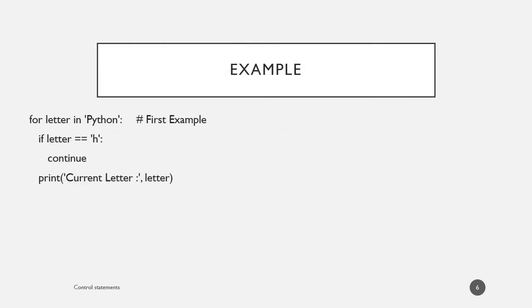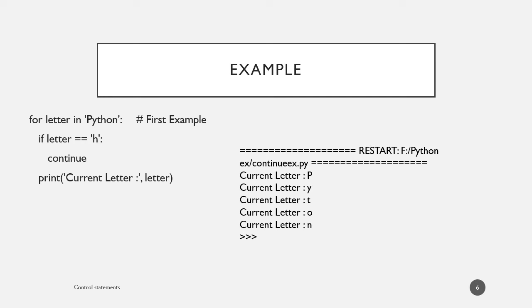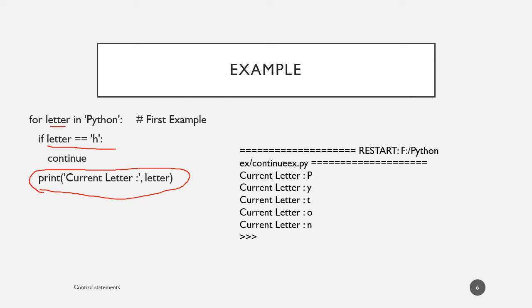An example: the same 'for letter in Python' loop. When letter equals H, we are not asking the system to break but we are asking to continue. See the result: the character P will be displayed, Y will be displayed, T will be displayed. When the letter is assigned value H, if letter equals H, we are asking the system to continue. So the print statement inside the for loop will not be executed, but the system goes to the next iteration. Letter is assigned the value O in the next iteration and the loop continues, giving the output shown.